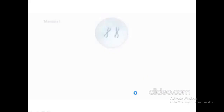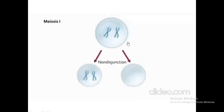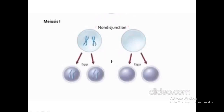Now looking at this Meiosis I video, this cell contains two chromosomes and the separation of the homologous pair is not proper. You can see that instead of each cell getting one chromosome, one cell gets two chromosomes. This results in one cell completely lacking a chromosome, while the other has a double number.